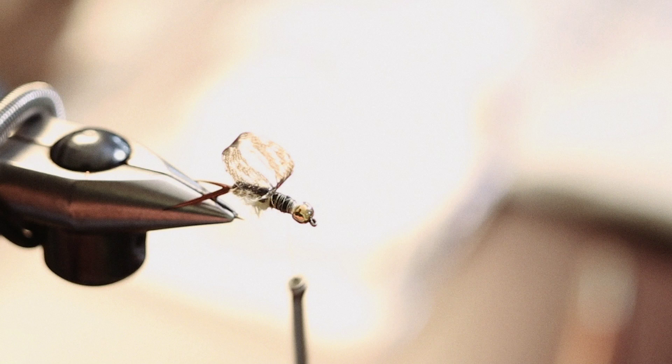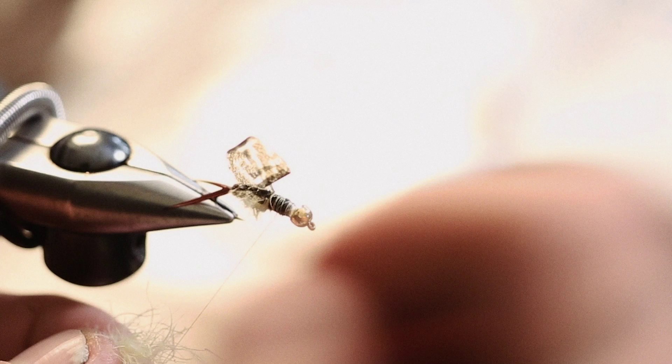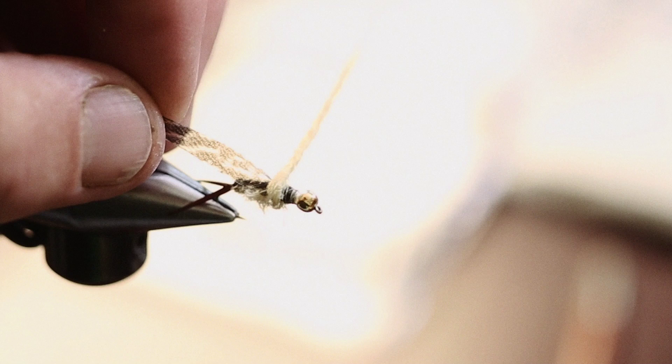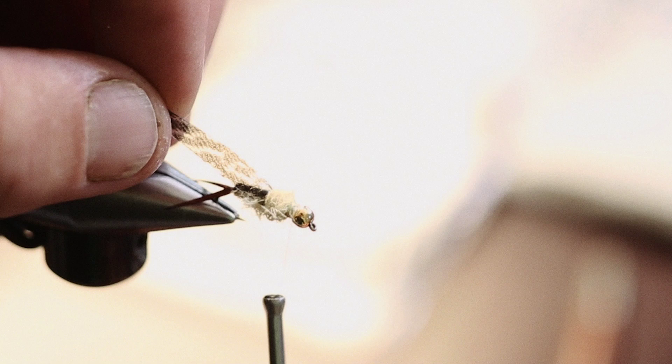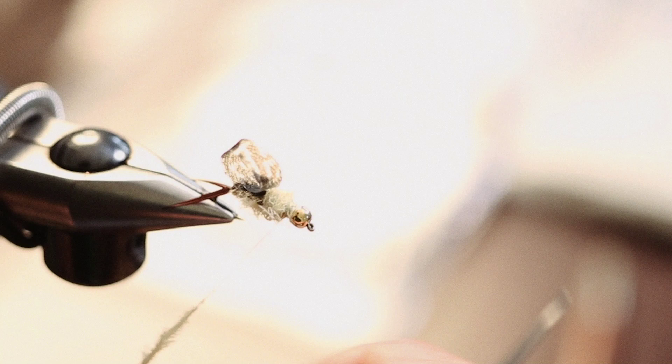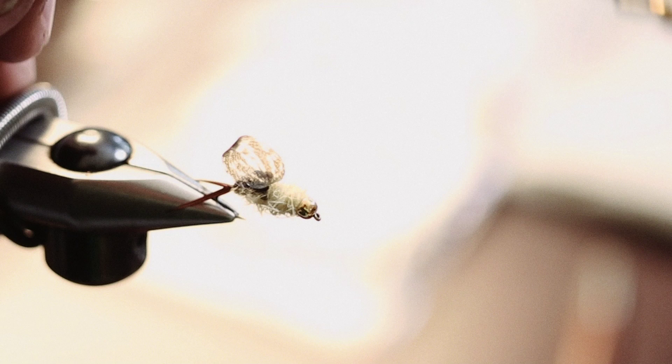I'm going to take a little more of the CDC dubbing and I'm going to dub a nice thorax. It's okay to be a little chunky with this dubbing. You want to have a good solid thorax. We're going to pick it out and it's going to help create legs and movement as well. We're going to wrap our Trout Hunter pale yellow CDC dubbing towards the eye of the hook and we're going to stop just short of the bead. It's always better to be able to add on than to have to subtract. When you go to pull it apart to subtract, it usually causes a mess.